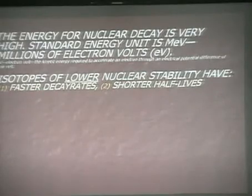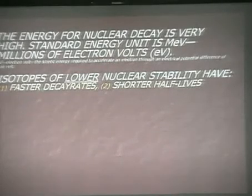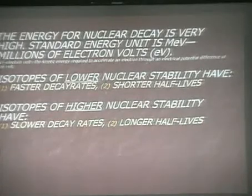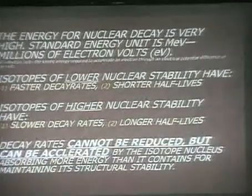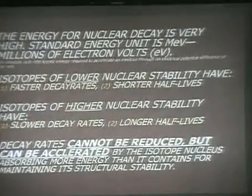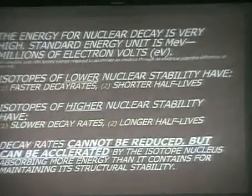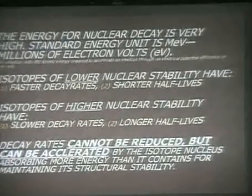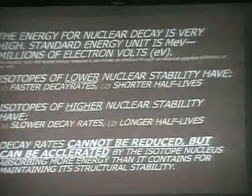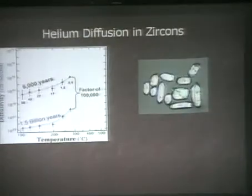Higher energy is right in line with greater or accelerated decay rate. Isotopes of higher nuclear stability have slower decay rates and longer half-lives. There's a direct correlation between the rate of decay and the amount of energy affording stability or instability to that particular isotopic nucleus. Decay rates cannot be reduced — they are what they are because the energetics of the nucleus is determined by the particles of the nucleus. But they can be accelerated: if the isotopic nucleus absorbs more energy than it contains for maintaining its structural stability, you're going to have an instability problem.